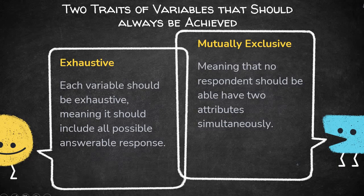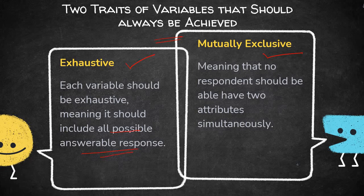We should also learn about two important traits of variables that should always be attempted to achieve — that is exhaustiveness and mutual exclusivity. When I say exhaustiveness, each variable should be exhaustive, meaning it should include all possible answerable responses, especially the researchers have to be very, very careful while giving the possible options.